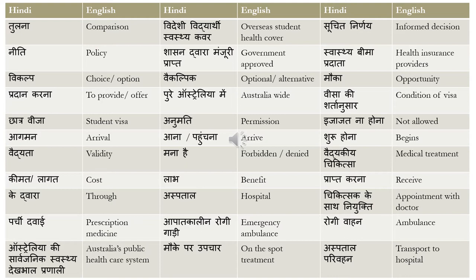These next words are similar but not exactly the same. 'Agman' means arrival; 'ana ya pohonchna' is to arrive — for example, 'wo aya ya fir wo yaha pohoncha' means he arrived. 'Shuru hona' means begins or has started — for example, 'natak shuru hua' means the show has begun. So 'agman' is arrival and 'shuru hona' is when something begins.